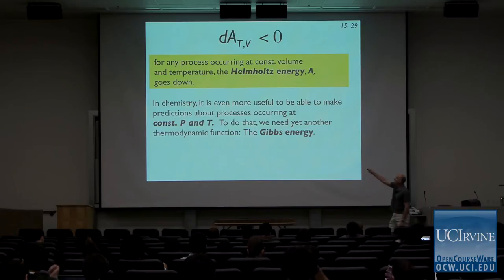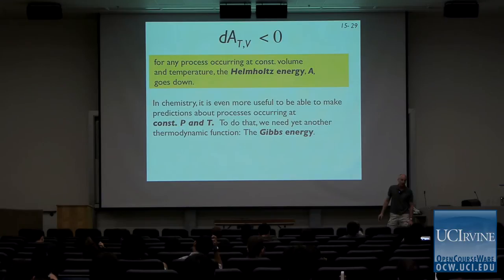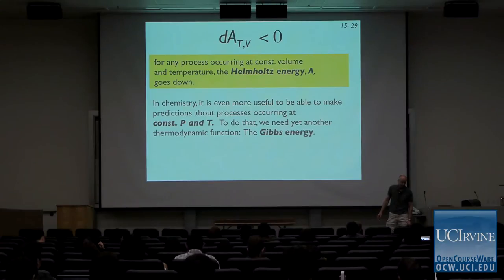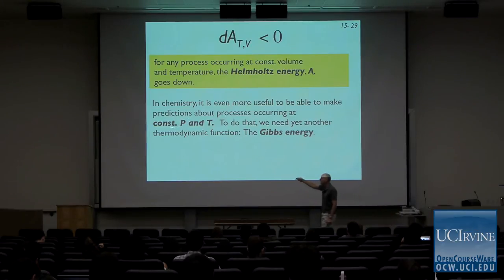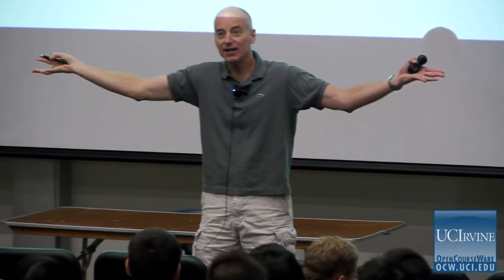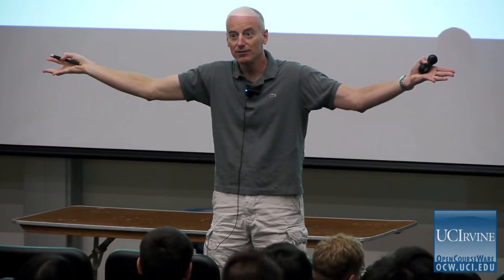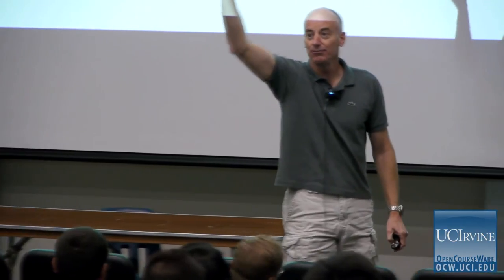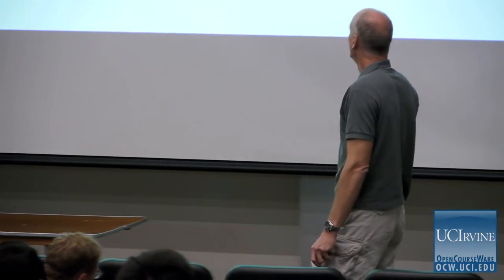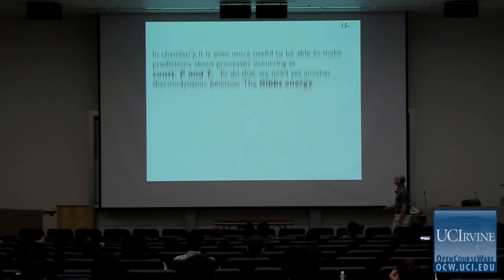So we need a different thermodynamic function. The Helmholtz energy is fine, but constant volume is inconvenient because we need a bomb calorimeter in many cases. In chemistry, it's even more useful to make predictions about processes occurring at constant pressure and temperature because that's dead easy — we live in an environment of quasi-constant pressure. So we can do chemistry open to the environment and make predictions about whether it's spontaneous. To do that, we're going to use something called the Gibbs energy.